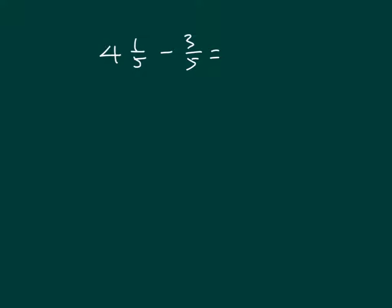Here's another problem. Can we take away 3/5ths from 1/5th? We can't, because we have only 1/5th and we're trying to take away 3/5ths — there are not enough 5ths. If we were to decompose 3/5ths, it would be 1/5th and another 2/5ths. We would subtract the 1/5th already, but then we would still have to subtract 2/5ths.